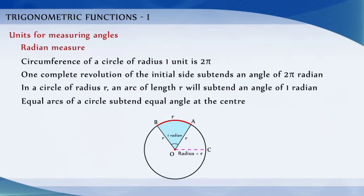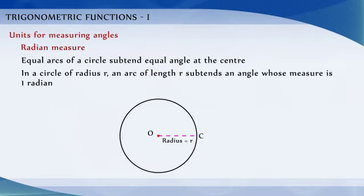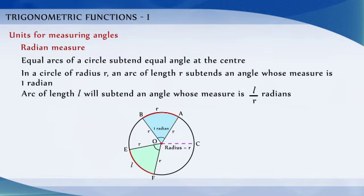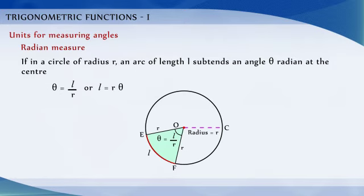We know that equal arcs of a circle subtend equal angles at the center. Since in a circle of radius r an arc of length r subtends an angle of 1 radian, an arc of length l will subtend an angle of l/r radian. Therefore, if in a circle of radius r an arc of length l subtends an angle θ radian at the center, we get θ = l/r, or l = rθ.